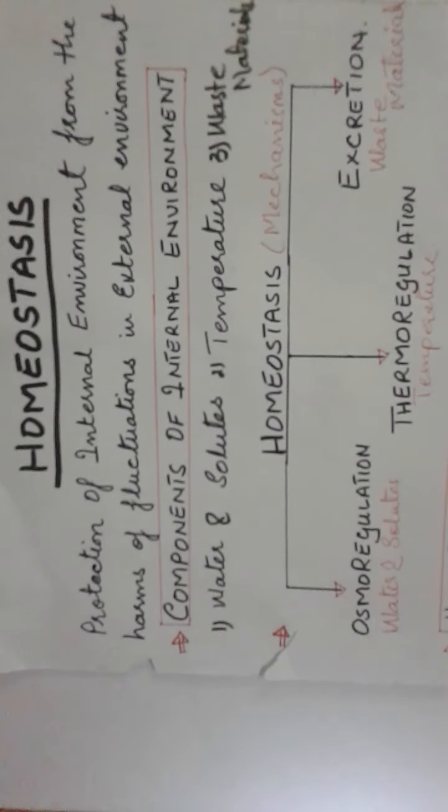Homeostasis is made of two words: 'homeo' means home and 'stasis' means to maintain. Just as we maintain our home - in winter we close doors and windows, in summer we open them to let heat escape - similarly, living cells maintain their internal environment according to fluctuations of the external environment. The definition of homeostasis is protection of the internal environment from the harms of fluctuations in the external environment.